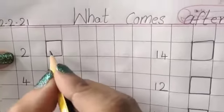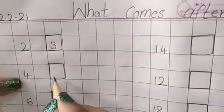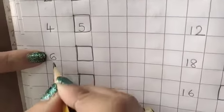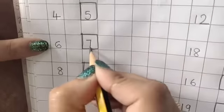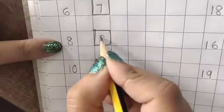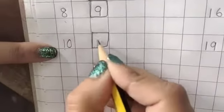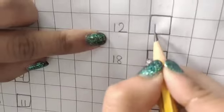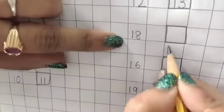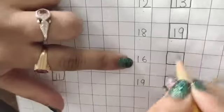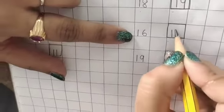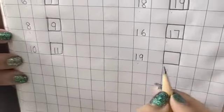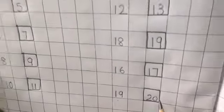After 2, which number comes? 3. After 4, which number comes? 5. After 6, which number comes? 7. After 8, which number comes? 9. After 10, which number comes? 11. After 14, which number comes? 15. After 12, which number comes? 13. After 18, which number comes? 19. After 16, which number comes? 17. After 19, which number comes? 20.